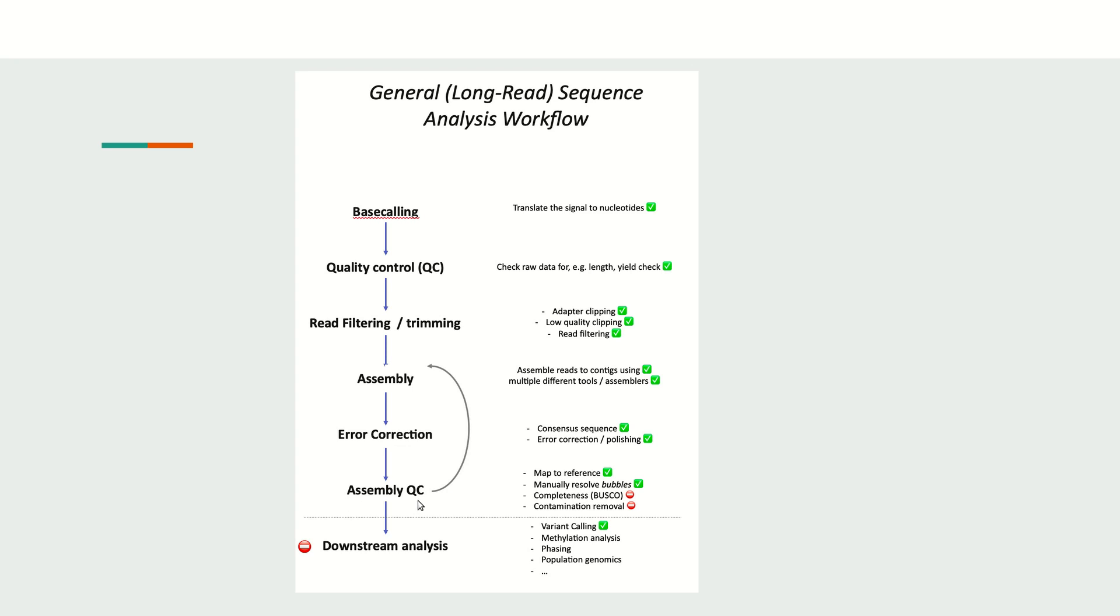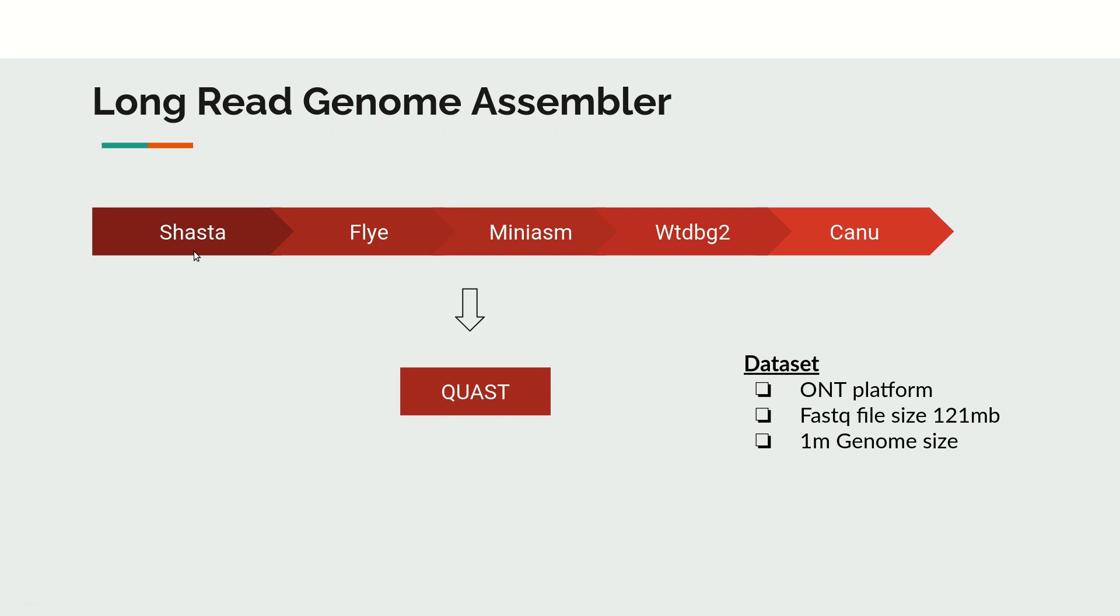Then we can check the assembly quality: what is the total assembly size, what is the N50 value, what is the NG50 value, those kinds of assembly statistics we need to check. If we are satisfied with the quality, we can stop it; otherwise, this process is an iterative process.